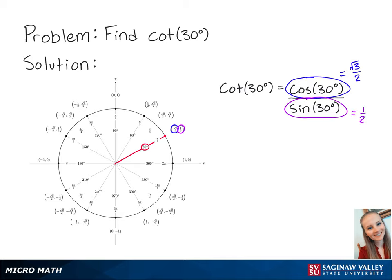So cosine of 30 degrees over sine of 30 degrees is equal to the square root of 3 over 2 over 1 half.